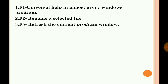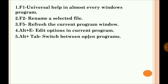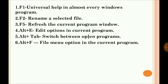Then Alt+E — edit options in the current program. Suppose you are working in a program and you want to edit something, then you can press Alt+E. Then Alt+Tab is used to switch between open programs — if there are two programs open and you want to switch between them, press Alt+Tab. Then Alt+F is the file menu option in the current program.